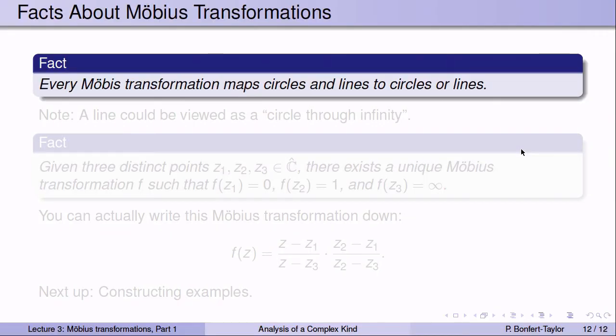Indeed, every Möbius transformation maps circles and lines to circles or lines. More precisely: the image of a circle is a circle or a line, and the image of a line is a circle or a line. You can actually view a line as a circle through infinity, and then say Möbius transformations map circles to circles. We will see how to prove this in our next lecture.